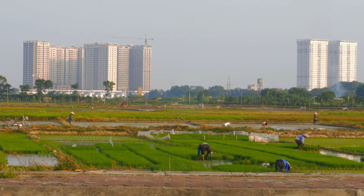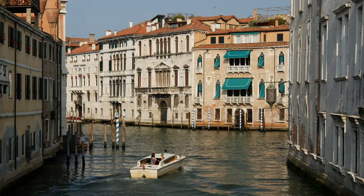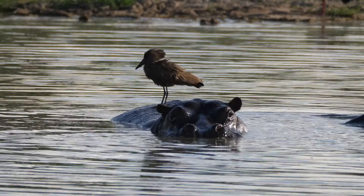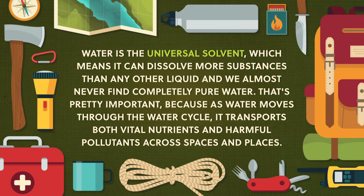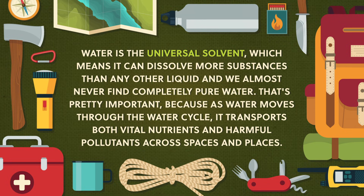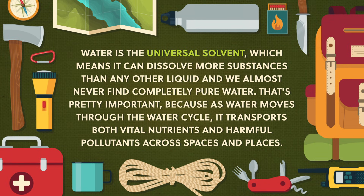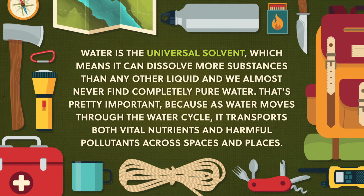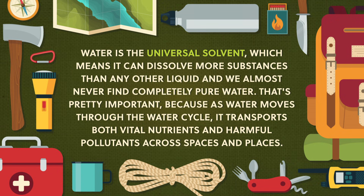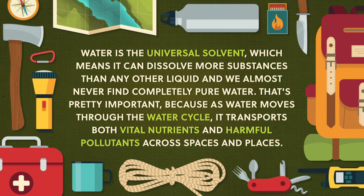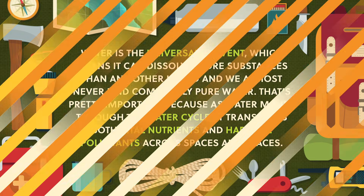And we need water for so many parts of our lives — agriculture, industry, transportation, recreation, and not least for all the flora and fauna that live here. Water is the universal solvent, which means it can dissolve more substances than any other liquid, and we almost never find completely pure water. Because as water moves through the water cycle, it transports both vital nutrients and harmful pollutants across spaces and places.